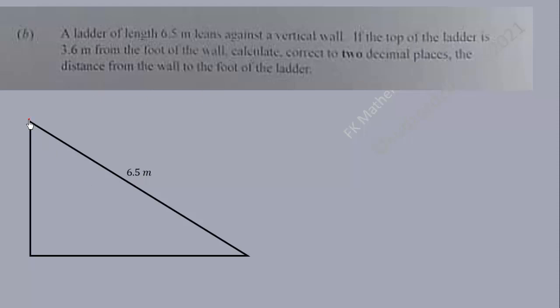And the top of the ladder here is 3.6 meters from the foot of the wall. This is the wall, so it means that distance is 3.6 meters. Calculate correct to two decimal places the distance from the wall to the foot of the ladder. So this distance here.